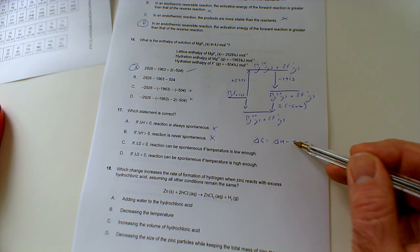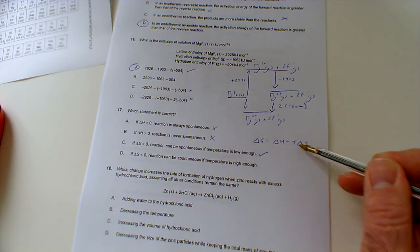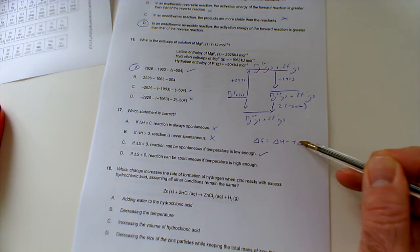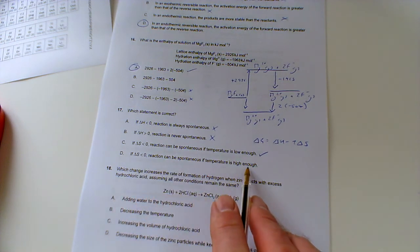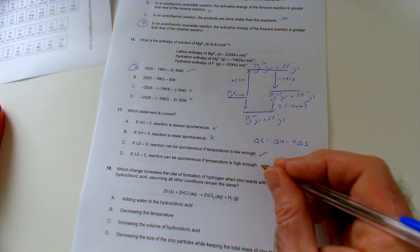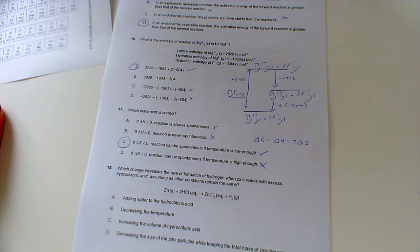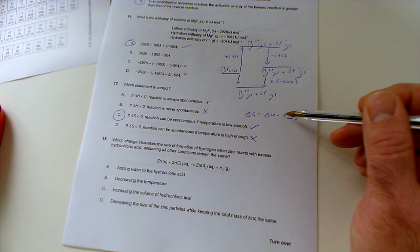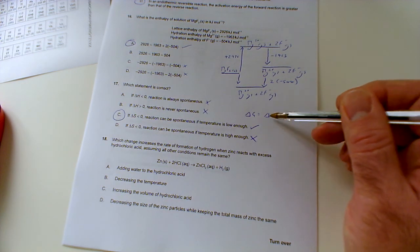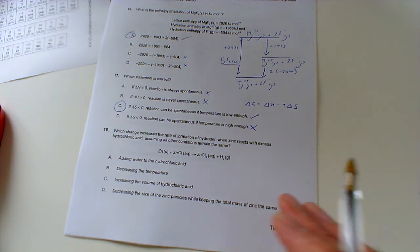If delta S is less than zero, so if delta S is negative, the reaction can be spontaneous if temperature is low enough. Well yeah, because it's going to be minus and minus, that's going to become a plus. And the point of a high T is T always makes delta S more significant. So I'm liking that one, because if delta S is minus then minus and minus is going to be a plus and that's going to be amplified by a high temperature. Whereas can be spontaneous if temperature is high enough? No, it's going to become less spontaneous at high temperature. So we don't want that one there. We're going to go with C because if delta S is negative that's a problem, but as long as T is low then it's not going to be enough to make it positive overall, as long as delta H is still negative as well.